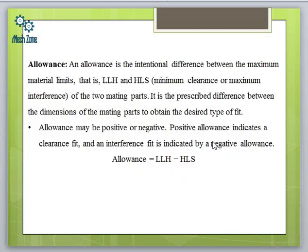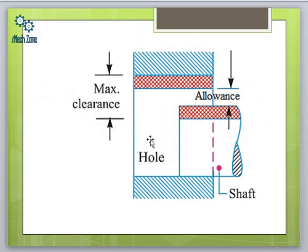Allowance refers to the minimum clearance intentionally given between the shaft and the hole. The basic difference between allowance and clearance is that allowance is given intentionally whereas clearance arises unintentionally. Allowance can be either positive or negative, and it corresponds to the minimum clearance — lower limit of hole minus upper limit of shaft. An important point: allowance is independent of tolerance.